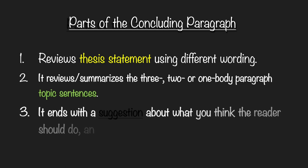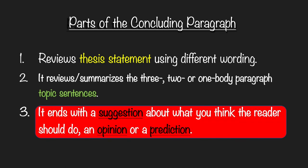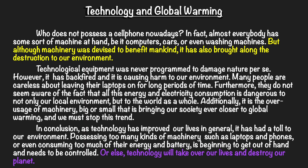Let's take a look at the third part. It ends with a suggestion about what you think the reader should do, or you can give an opinion or a prediction. In our example, I chose to write a prediction. As you can see, it's the last sentence of the concluding paragraph, and it reads: 'Or else, technology will take over our lives and destroy our planet.' This is just a prediction, but I can give an opinion or a suggestion to the reader as well. So it's up to you.